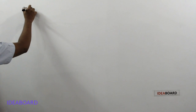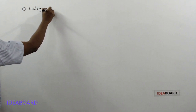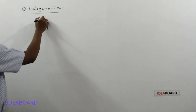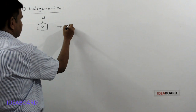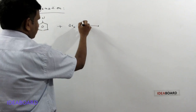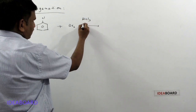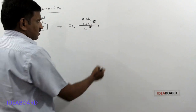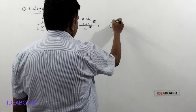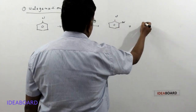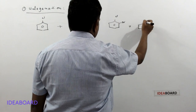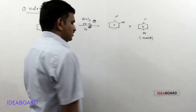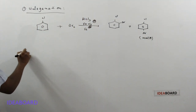In electrophilic substitution reactions, the first one is halogenation. Halogenation means reaction with a halogen. If chlorobenzene reacts with chlorine or bromine in the presence of AlCl₃ or FeCl₃ (a Lewis acid), it undergoes halogenation and gives two products — ortho-bromochlorobenzene and para-bromochlorobenzene. The para product is generally the major product because it has less steric repulsion and more stability.